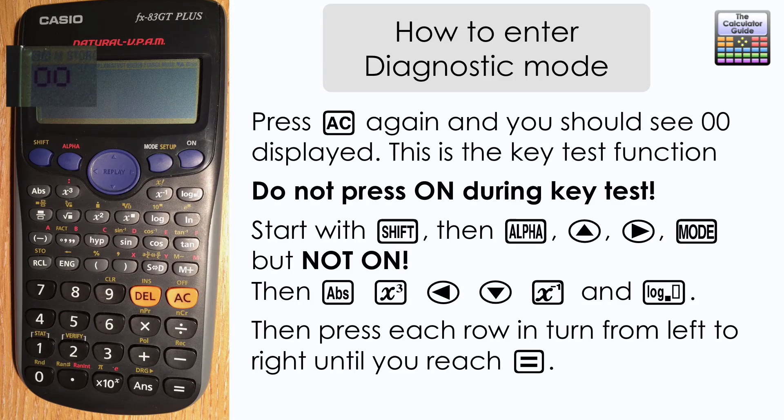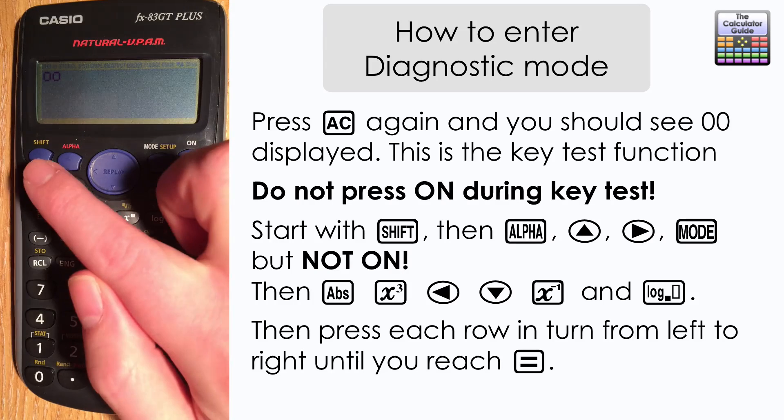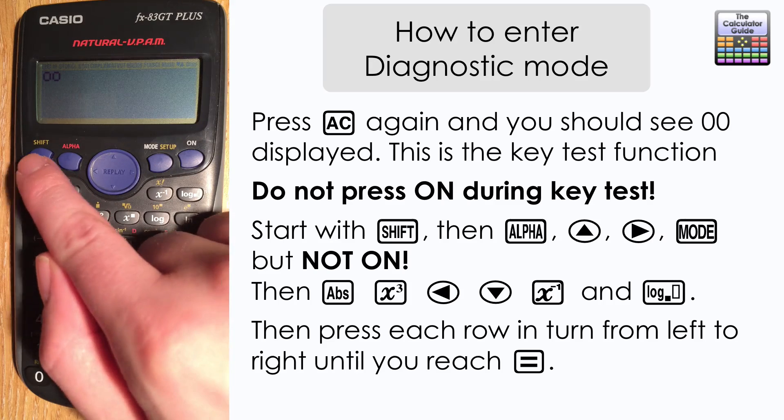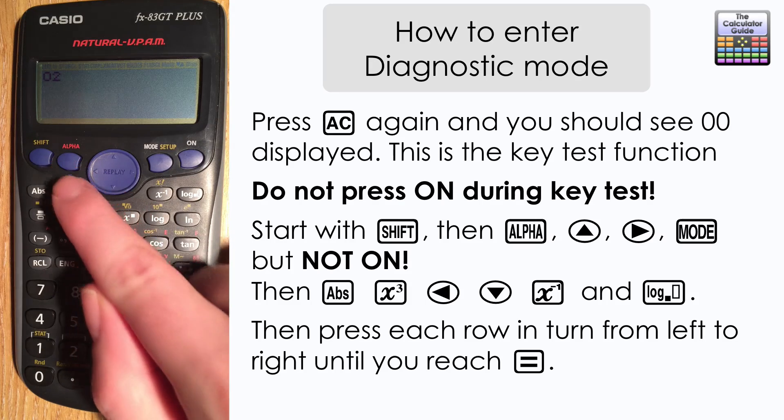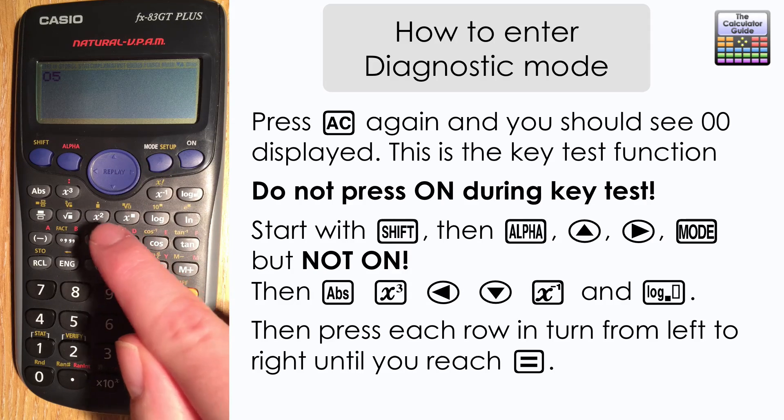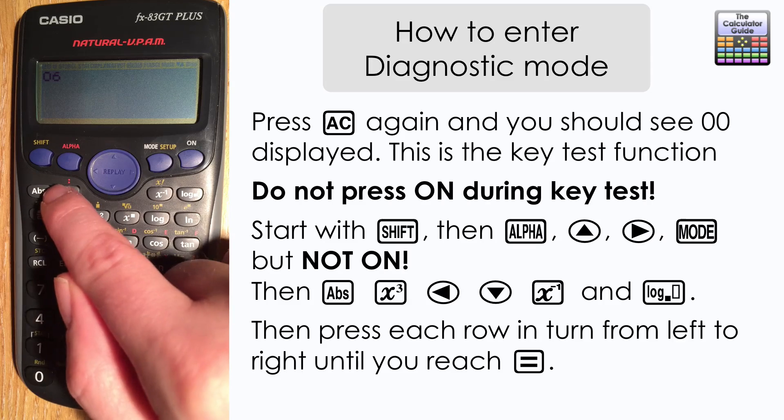Now you should see two zeros displayed at the top. This is the key test function. Don't press ON at any point during this key test, otherwise it will take you back to the normal function of the calculator. You want to start with shift, and we're going to scroll along through the keys. The first line is actually shift, alpha, up, right, and then mode, but not ON.